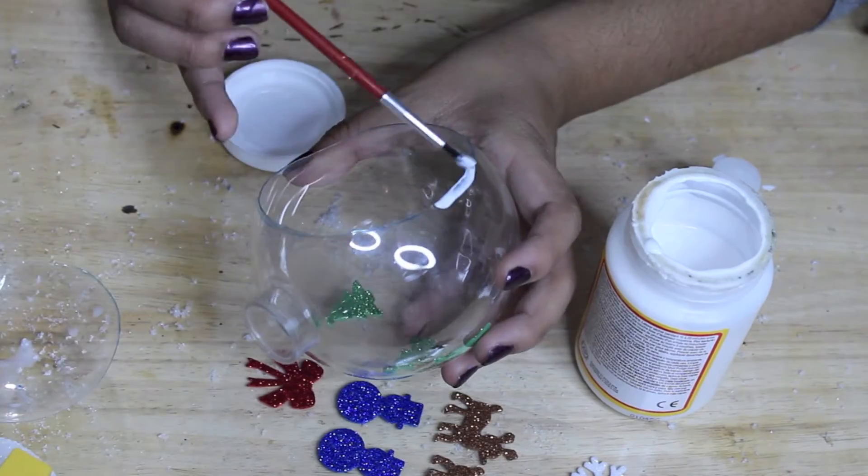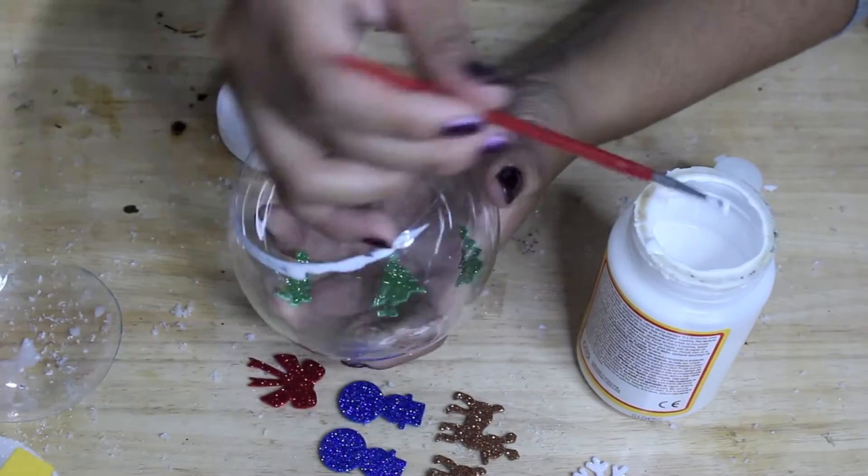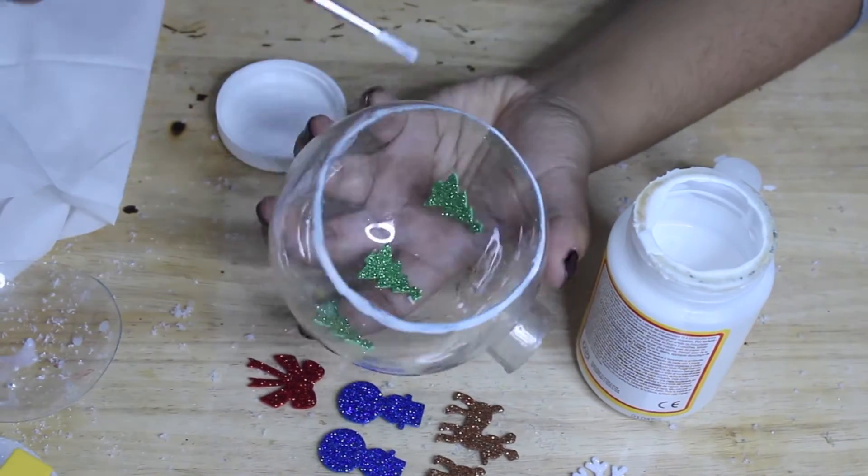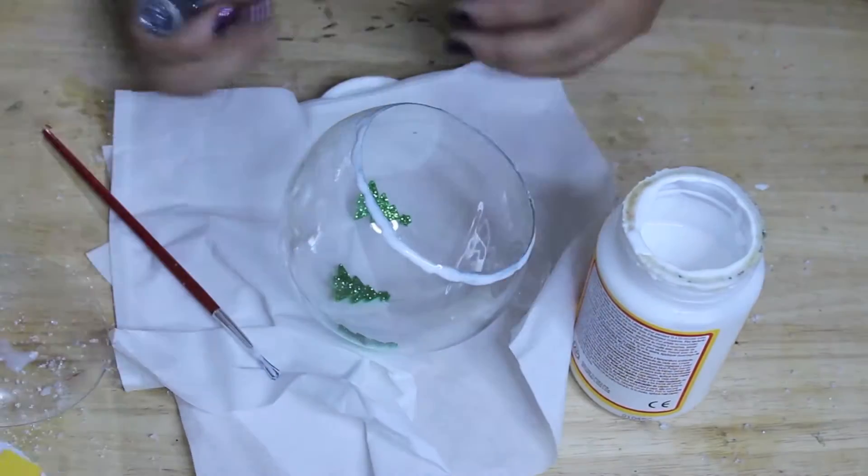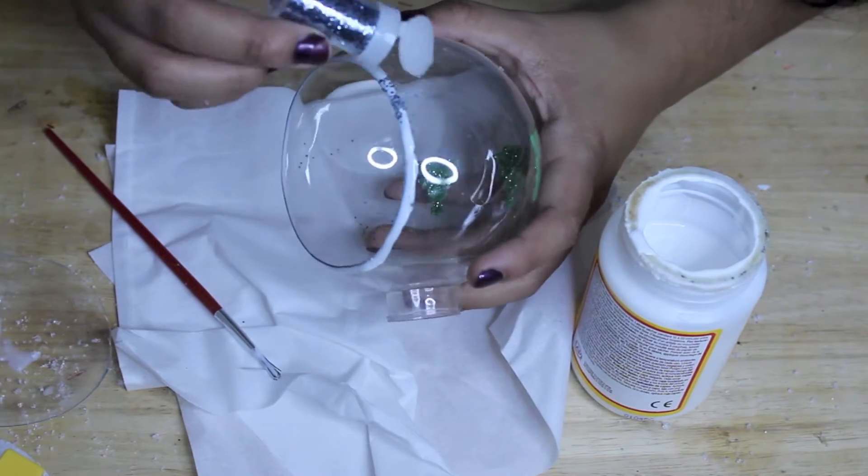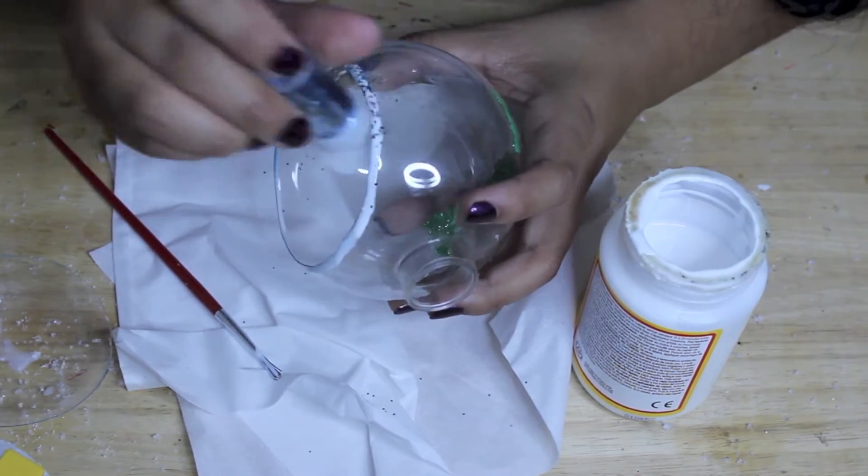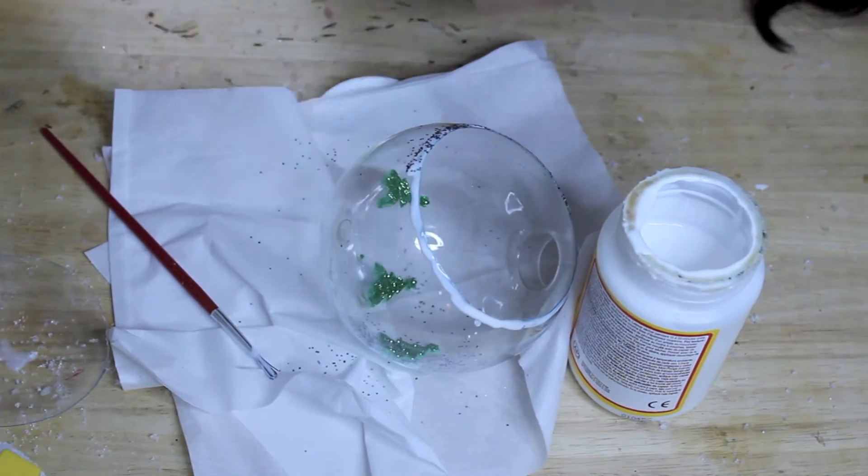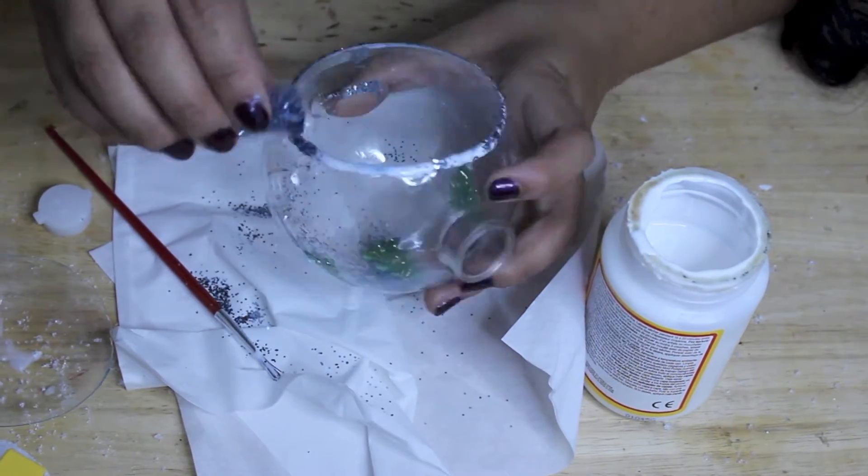Then take Mod Podge and apply that onto the outer edges of the ornament ball, because next we will be applying glitter. Carefully apply glitter onto the outer edges of the ornament ball. Make sure you put a tissue under the ornament so you can catch all of the extra, and it will make the ornament look super beautiful and fancy.